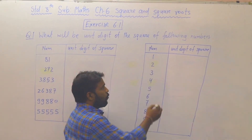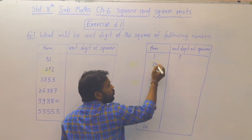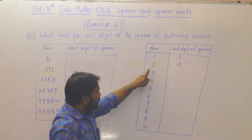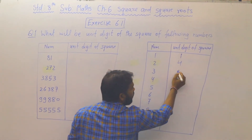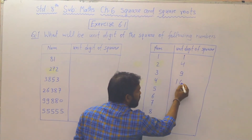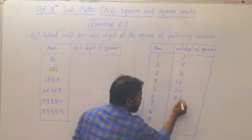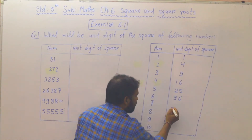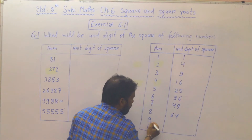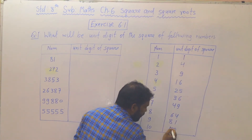यहाँ पर number है 1 — 1 का square 1. 2 का square 4. 3 का square 9. 4 का square 16. 5 का square 25. 6 का square 36. 7 का square 49. 8 का square 64. 9 का square 81. 10 का square 100.